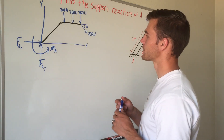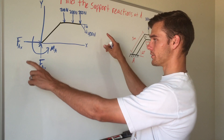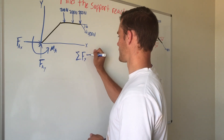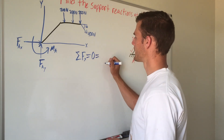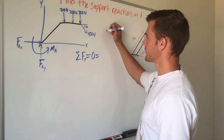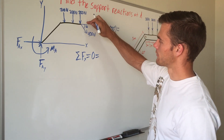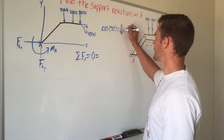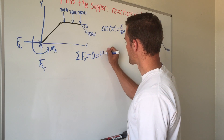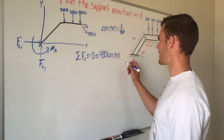We're going to solve for these three unknowns using equilibrium equations. We'll start with the sum of forces in the X direction because there are only two forces in that direction. Setting the sum of forces in X equal to zero, we have our 400 newtons going 30 degrees below horizontal. To find the X component, cosine of 30 degrees equals the adjacent side divided by 400, so the X component is 400 cosine of 30 degrees, which is positive since it goes in the positive X direction.